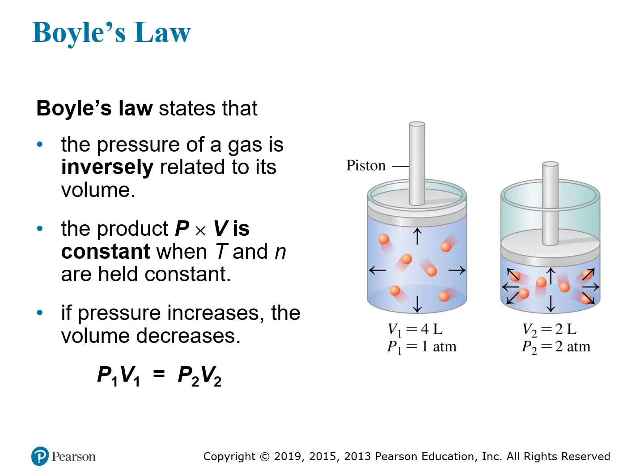Boyle's Law states that the pressure of a gas is inversely related to its volume. Looking at this diagram on the left, you have a chamber with some gas in it. The volume of the chamber is 4 liters, with a certain amount of gas particles at constant temperature, constant number of particles. The gas particles are exerting a pressure, and this movable piston is held in place, so whatever pressure it's held at is the pressure of the gas particles.